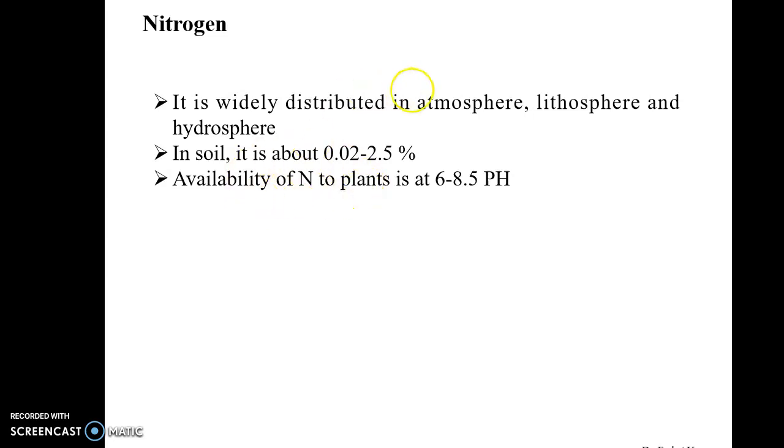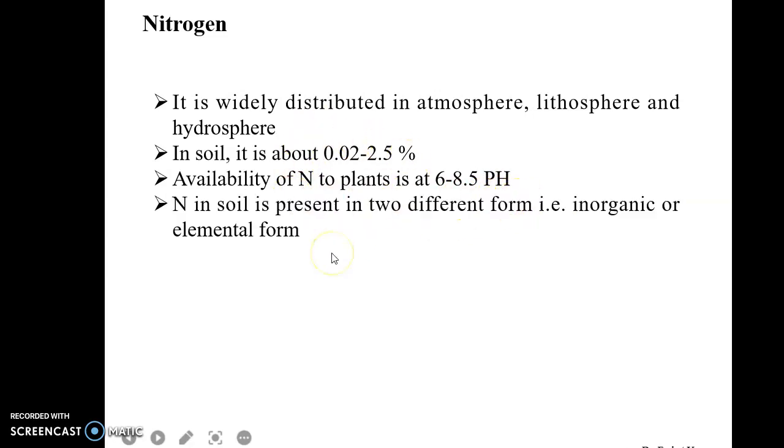The availability of nitrogen present within the soil depends on the pH of the soil. If the pH of the soil is 6 to 8.5, then nitrogen is available to the plants.